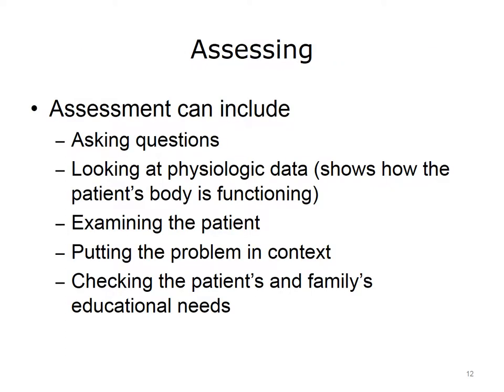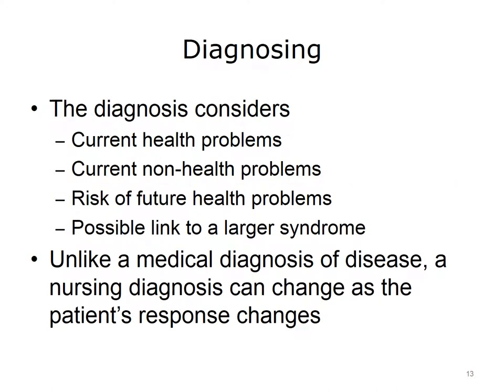To assess a patient, the nurse asks questions, observes the patient, and examines the patient as needed. A nurse asks the patient or the patient's family about the history of the health problem. The nurse also looks at physiologic data, which shows how a patient's body is functioning through test results on the patient's chart or through a physical exam. In the assessment, the nurse also considers the context of the problem, including the patient's attitude and behaviors as well as the patient's or the family's cultural beliefs, spiritual beliefs, lifestyle, and financial resources. The nurse also considers the patient's and family's needs for education about a relevant health topic, and plans for the patient's risk of other health problems.